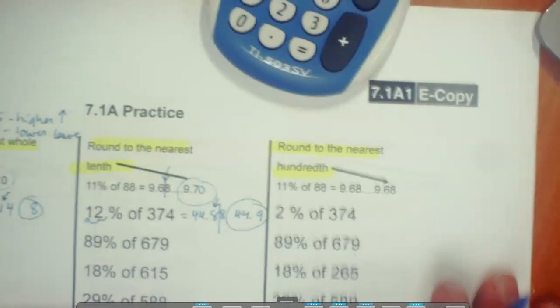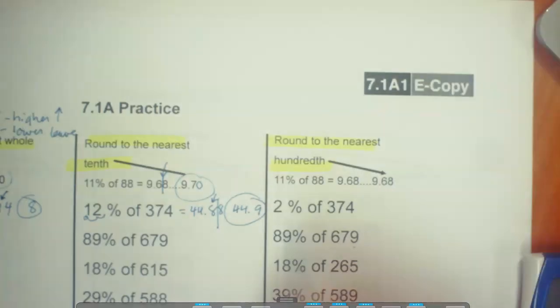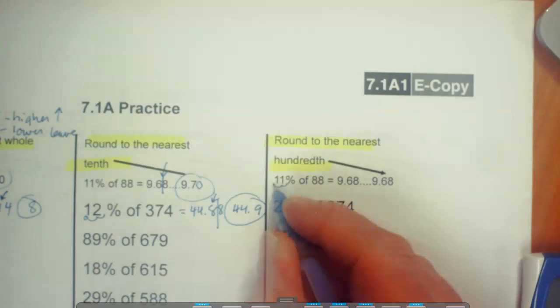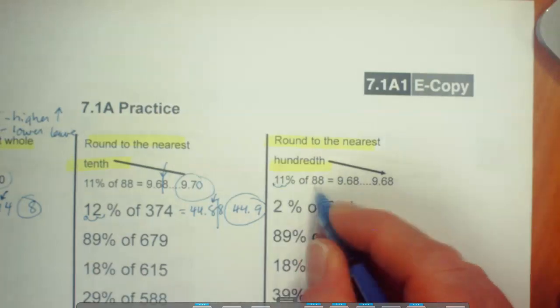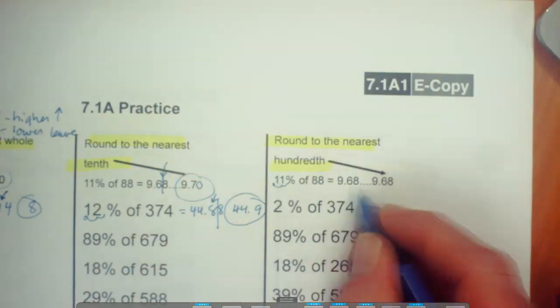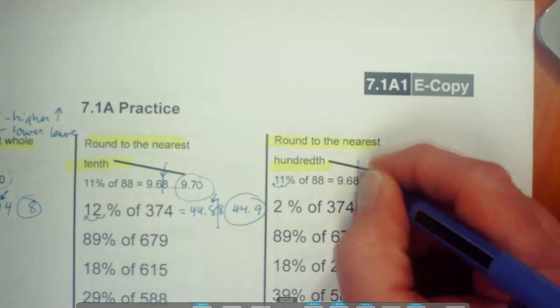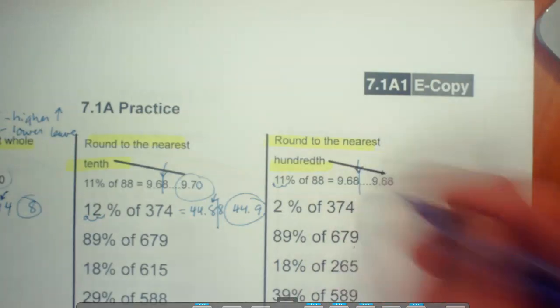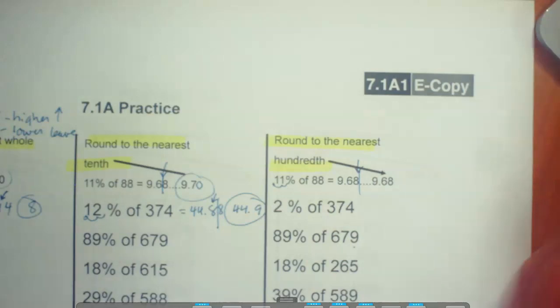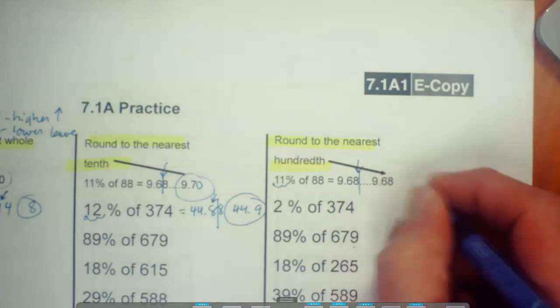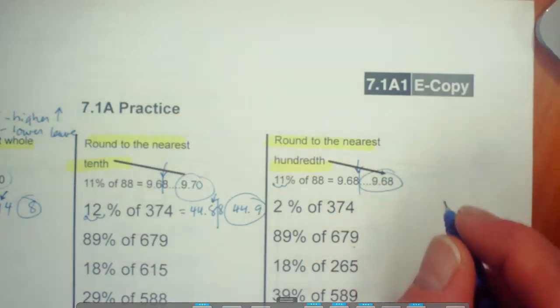All right. Now we're going to round to the nearest hundredth. Again, we'll look at our example. 0.11 times 88 equals 9.68. So we're looking right here, and then we just look behind it. Is there anything there? No, it just terminates. So this one is just 9.68. We don't have to change anything.